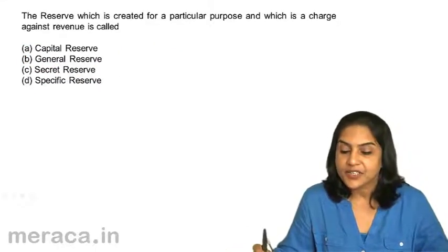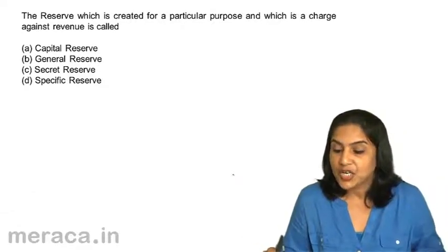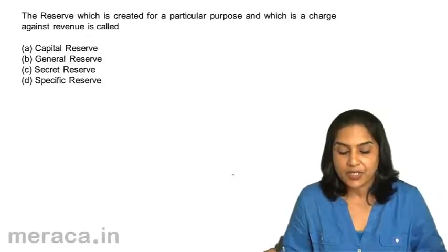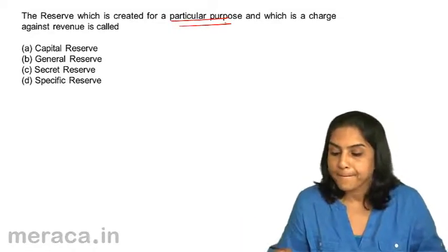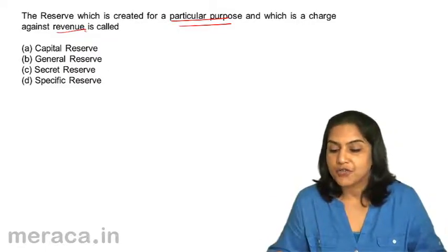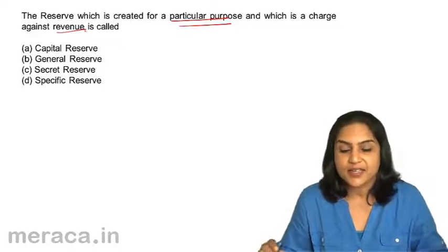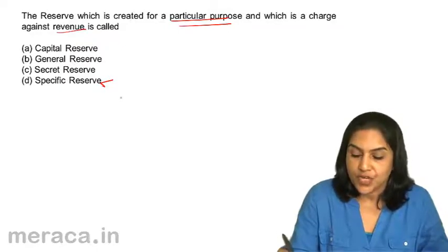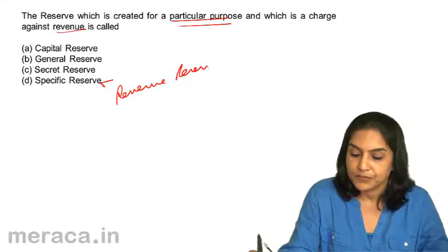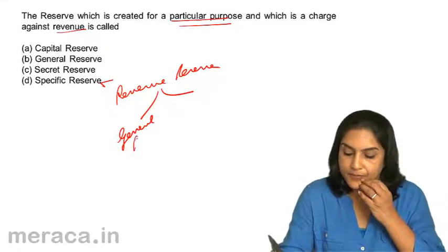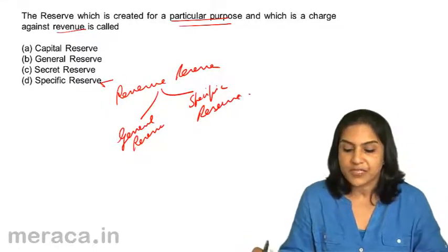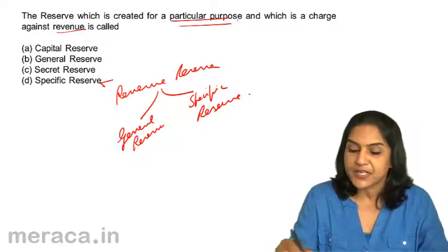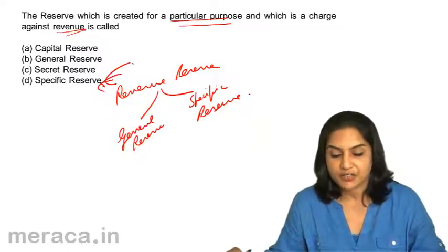Next. The reserve which is created for a particular purpose and which is a charge against revenue is called: A. Capital Reserve. B. General Reserve. C. Secret Reserve. D. Specific Reserve. A reserve which is created for a particular purpose is a specific reserve and it is a charge against revenue. Revenue reserve could be general reserve or could be specific reserve. The correct answer is D — Specific Reserve.